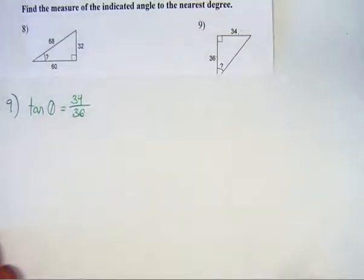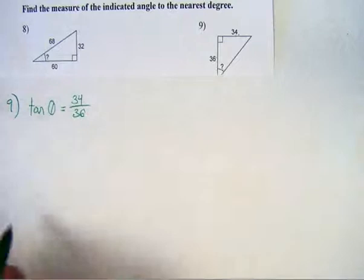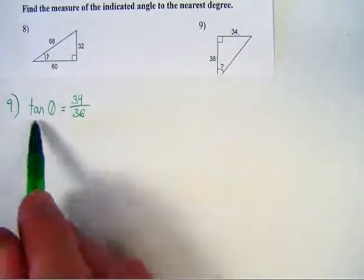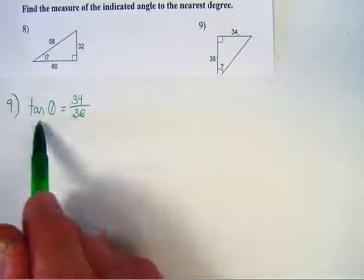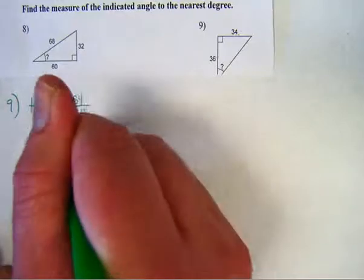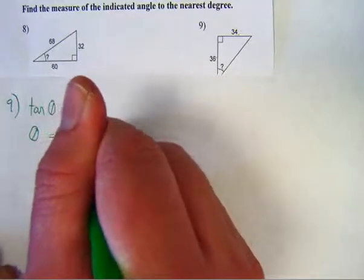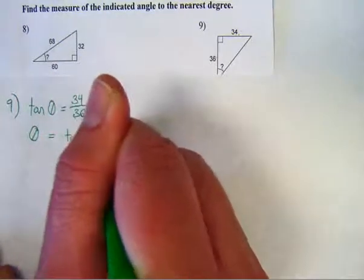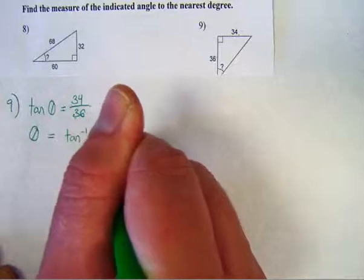And so I know that the tangent of theta, whatever theta may be, is 34 over 36. Now if I take the inverse tangent of both sides, I'm going to be left with theta equals the inverse tangent of 34 over 36.